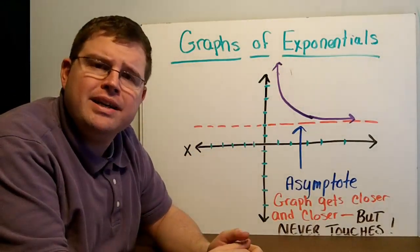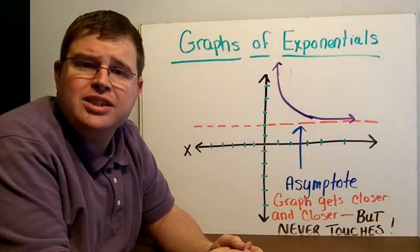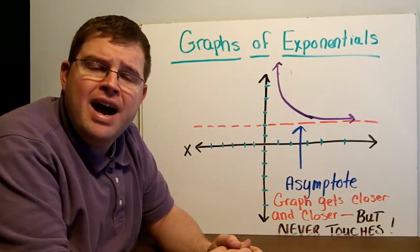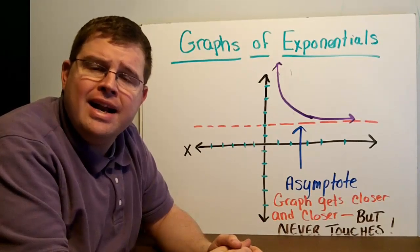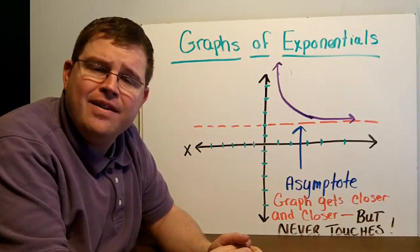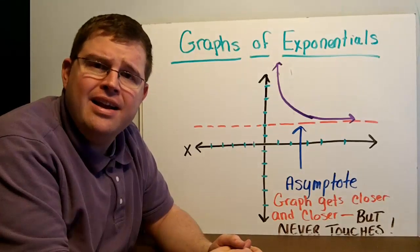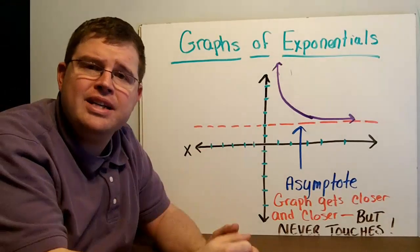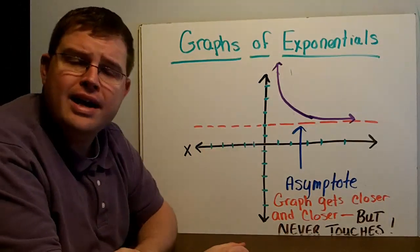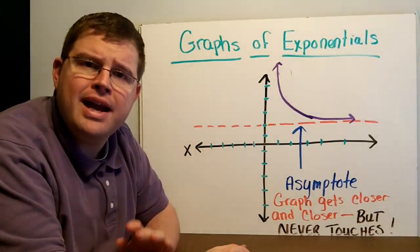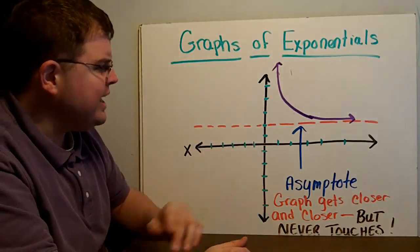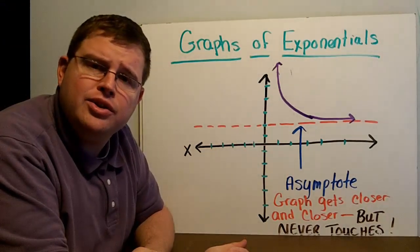It gets microscopically close — we might need an electron microscope to see the space in there. I know that doesn't make sense because we usually think eventually it has to touch it, but it doesn't. Take a number like 1 and divide it in half: you get 1-half. Divide in half again: 1-fourth. Again: 1-eighth, 1-sixteenth, 1-thirty-second, 1-sixty-fourth. You'd keep getting tinier and tinier fractions, getting really close to 0, but never touching it. You can keep cutting any number in half infinitely. So this dashed line is called the asymptote — the line the graph gets closer and closer to but never touches.